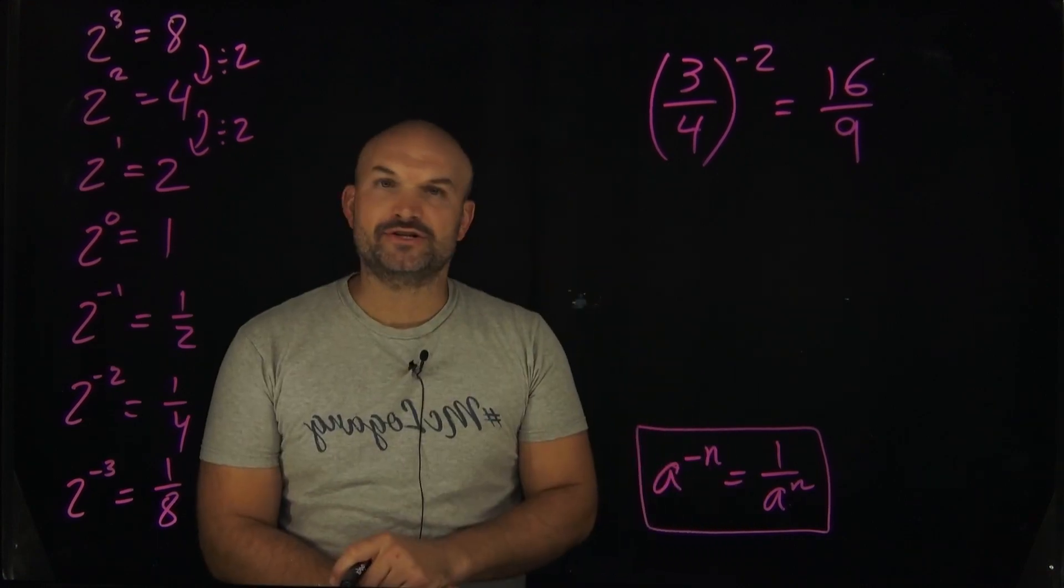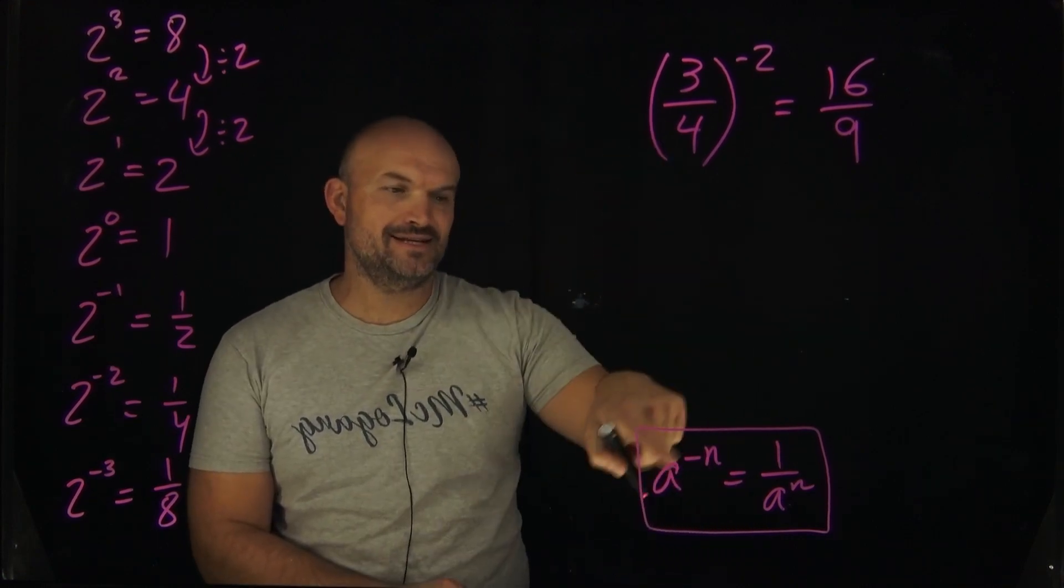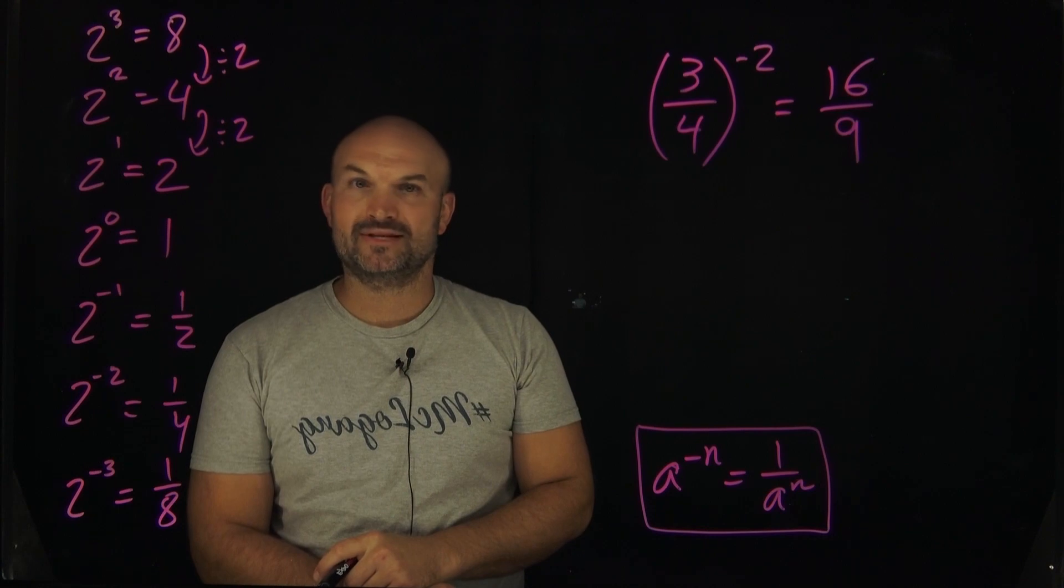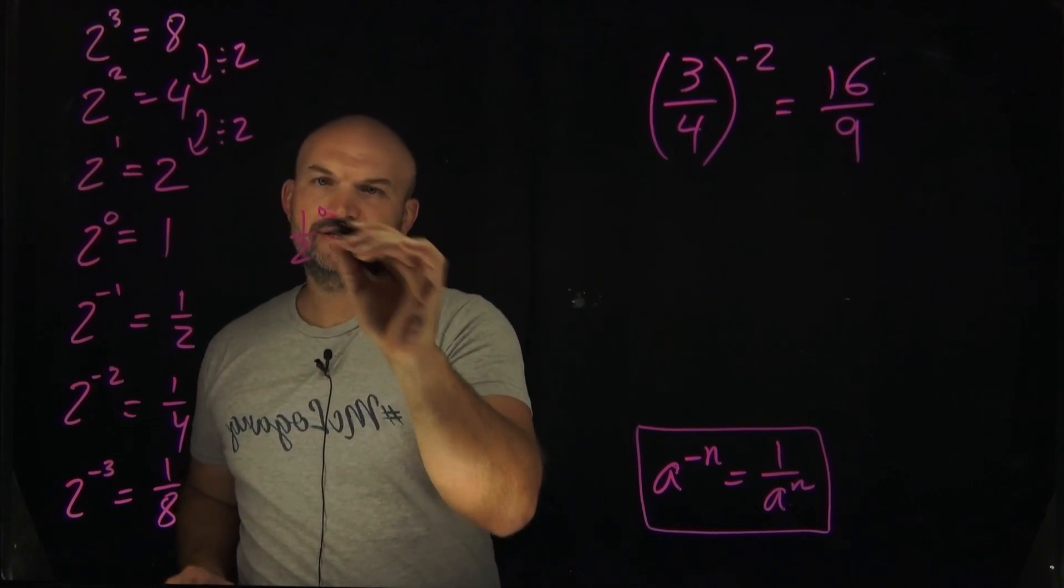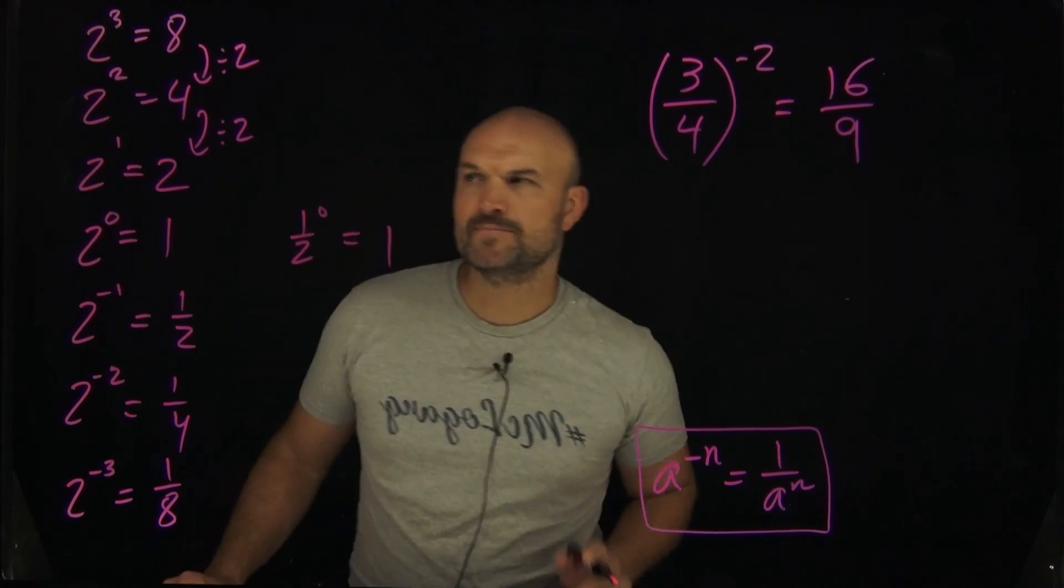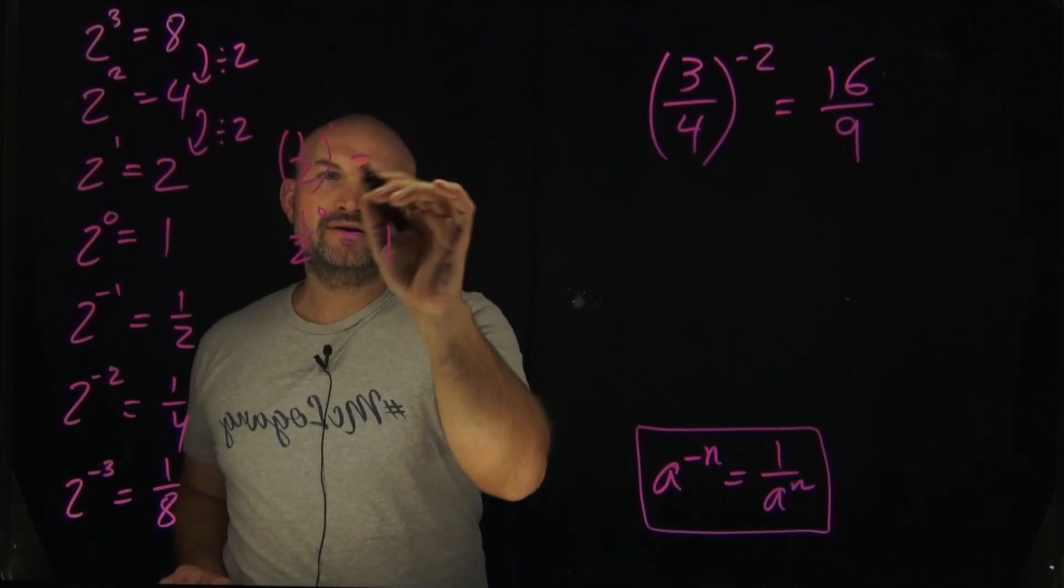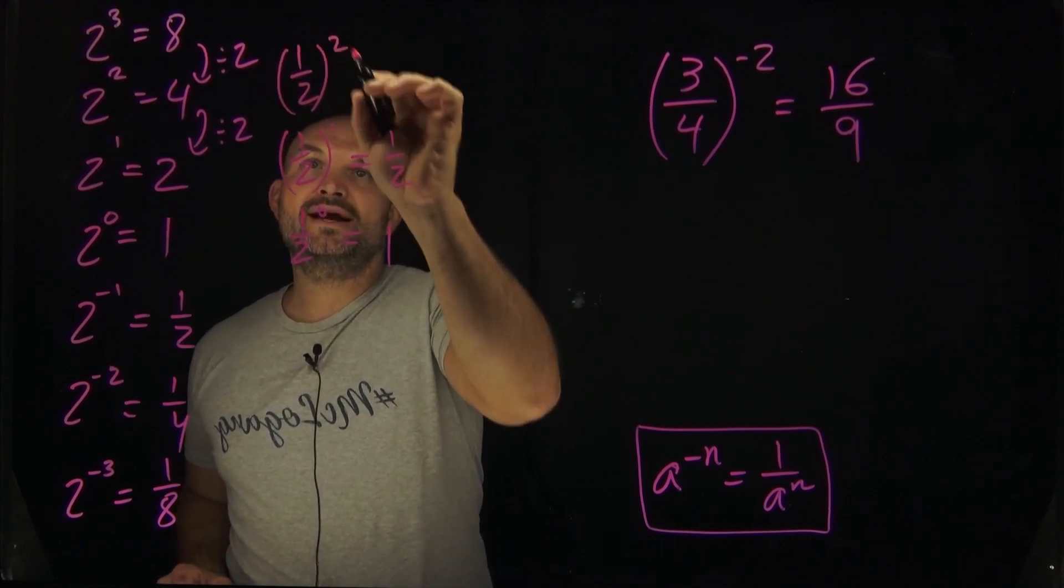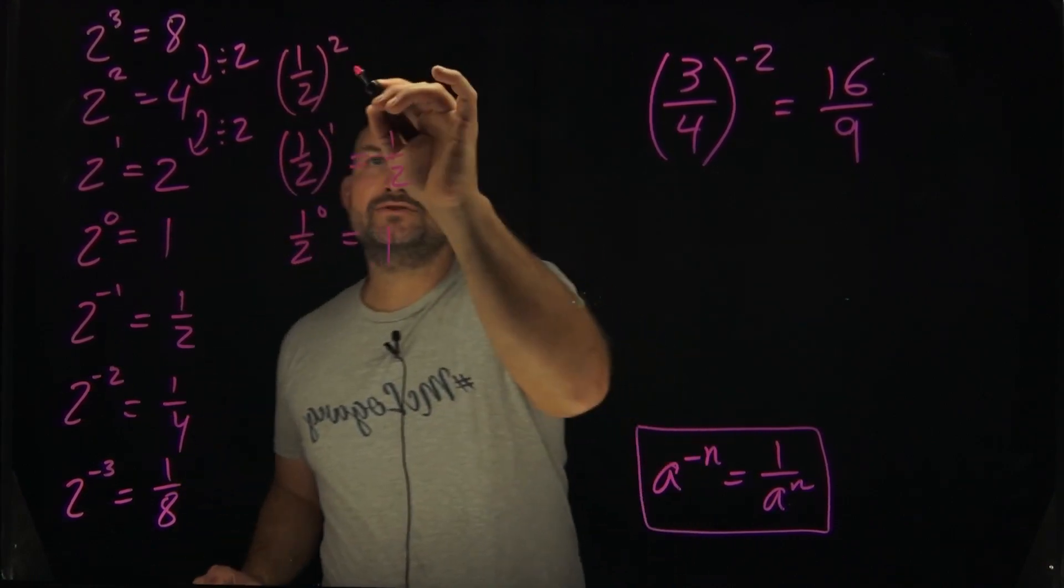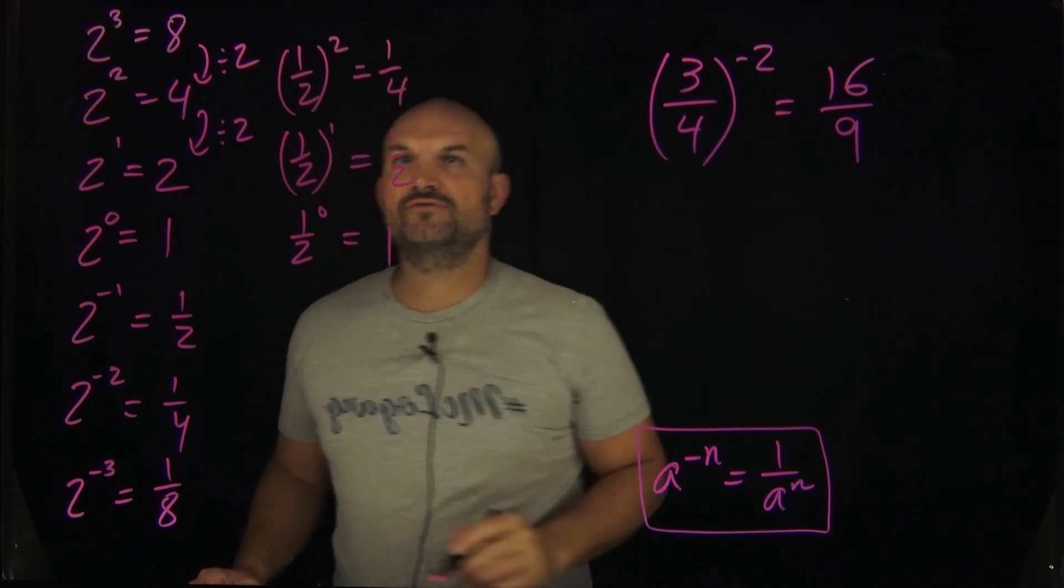Now what is that gonna do with fractions? Well let's do the same thing. 1 half to the 0 power, we're gonna assume is going to be 1. If I have 1 half raised to the first power, we know that's going to be 1 half. If I have a 1 half squared, well that's 1 half times 1 half, that's going to be a 1 fourth.